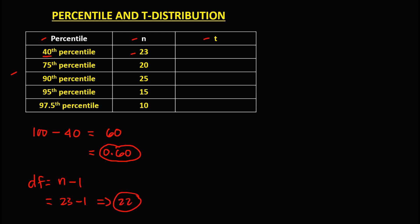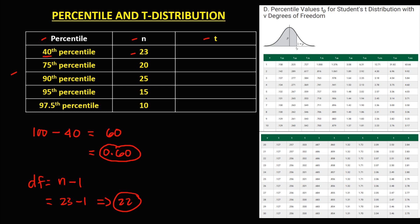To find the t-value for this 48th percentile, we're going to use this table. Since the area to the right of this 48th percentile is 0.60, we have t.60, and for the degrees of freedom, that's 22. Therefore, the t-value is 0.256.